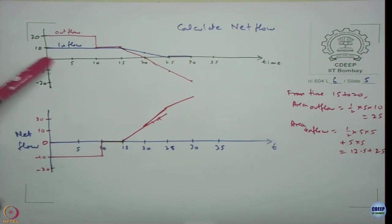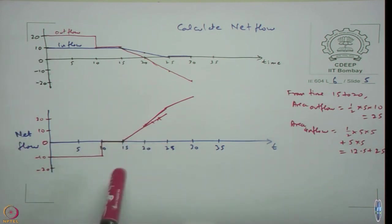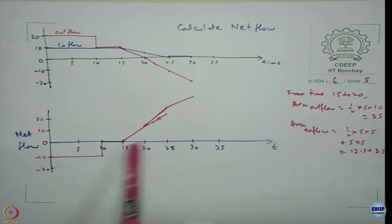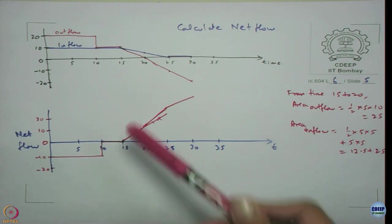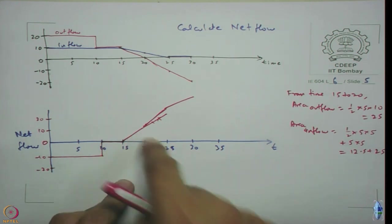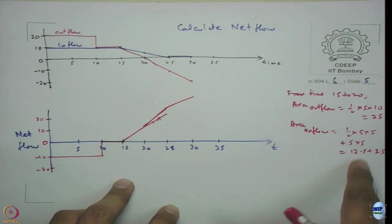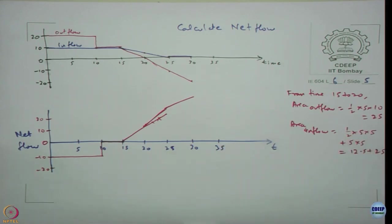What we are trying to do here is calculate the net flow first, and then using that net flow compute the stock. If net flow is constant, then the stock increases linearly. If net flow is increasing, then we get some sort of parabolic or curved function in the stock. Once we get the net flow pattern, we can derive the stock behavior. The area covered under the net flow curve equals the change in stock.